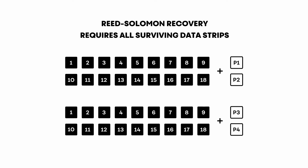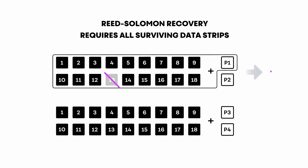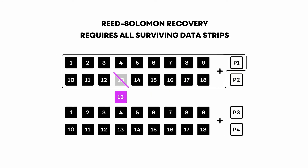You could build a 16 plus 4 Reed-Solomon system. The problem is when you do a recovery, Reed-Solomon codes require you to read all of the survivors. And so there's a maximum width to which you can write those stripes before they become unwieldy.